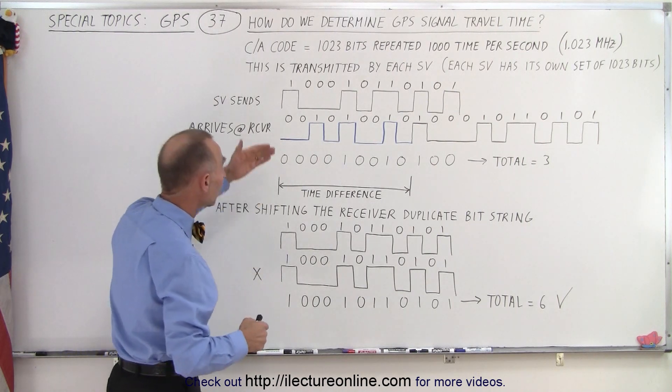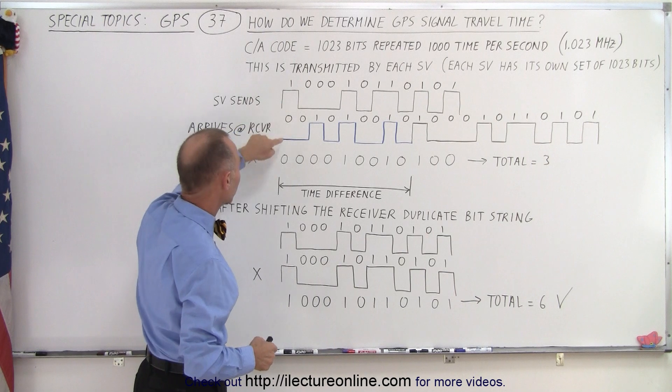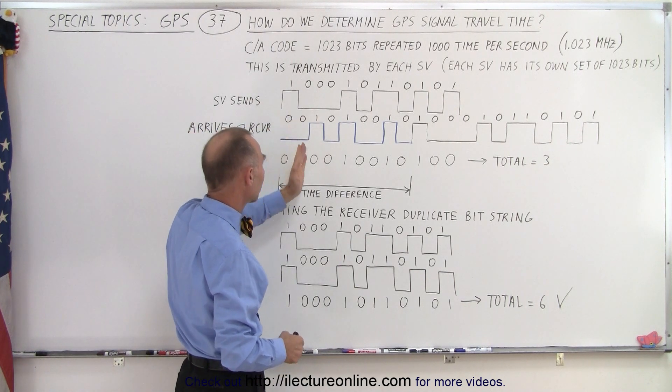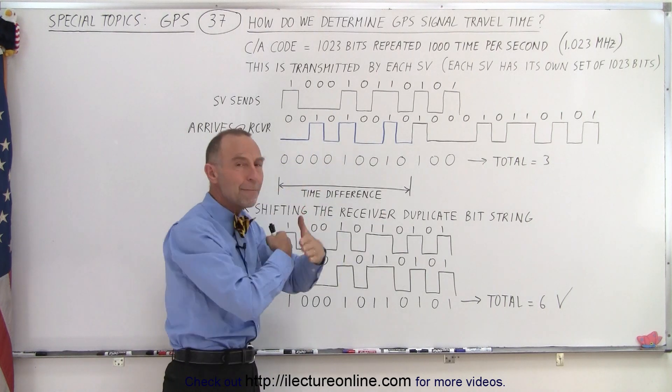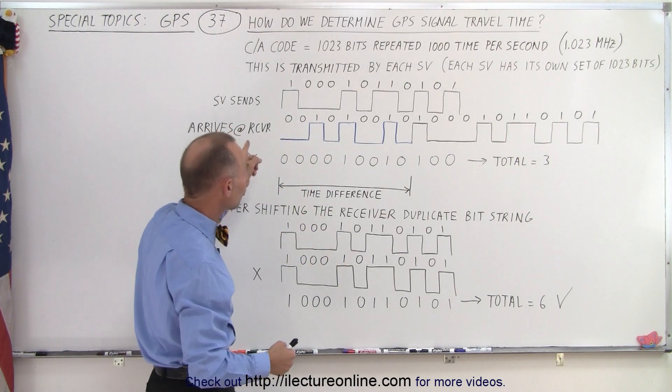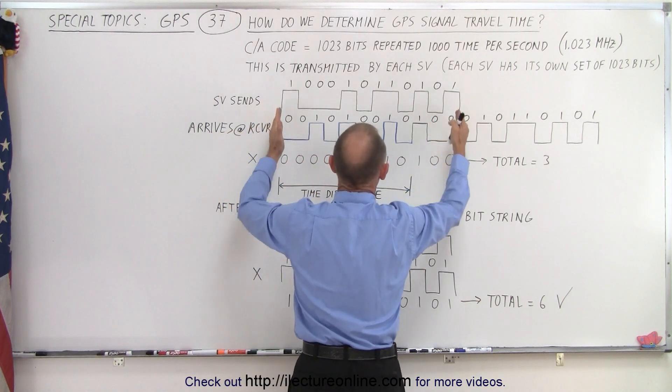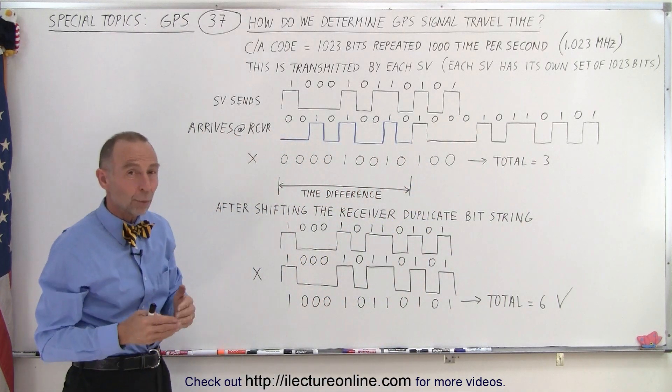Now what we do is we multiply the two bit strings together. Whenever we have a zero times a one we end up with a zero, of course zero times zero is zero, one times zero is zero, whenever we have a one times a one we end up at a one. Since they are not matched up, notice that the total number that we then match up with this string over here down below, we only get a number of three bits where they match.